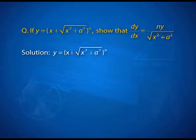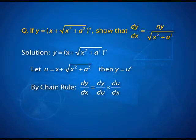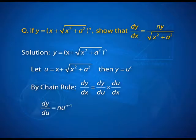Let us see what we do as we start the derivative. Let us take the inner function — the function which is the base — to be u. So let u be x + √(x² + a²). Then clearly y equals u to the power n, and therefore by chain rule the derivative of y can be written as the derivative of y with respect to u times the derivative of u with respect to x. The derivative of y with respect to u is n·u^(n−1).